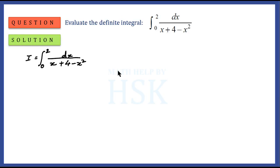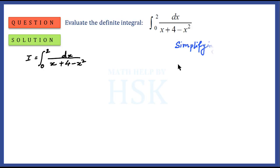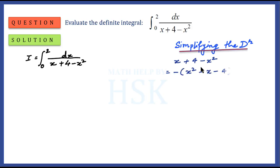To solve this question, I assume the given definite integral is equal to I. To solve this definite integral, we first have to simplify the algebraic expression given in the denominator. Whenever the denominator contains an algebraic expression, we convert it into the square of two terms — one containing x and the other a constant term — so that it can be integrated.